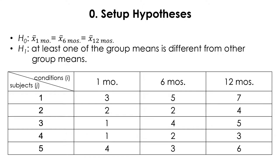Here are our hypotheses. The null is that there will be no difference in weight loss across all time periods. The alternative is that there will be a difference in at least one of the groups compared to the others. We have the same data table, but the columns are measured within subjects — so all data on a row comes from the same individual, with weight loss measured after one month, six months, and 12 months of treatment.